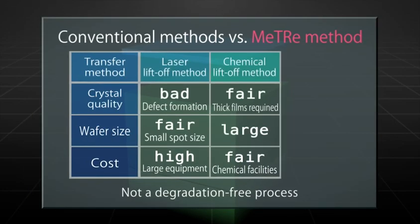Laser liftoff and chemical liftoff processes are examples of such detachment processes. However, these methods require either large-scale laser equipment or chemical processing using a large quantity of acid solutions. Another problem is that the detached thin film devices are not free from degradation.